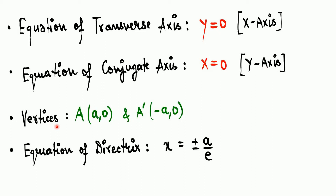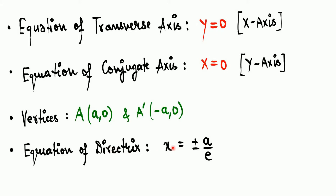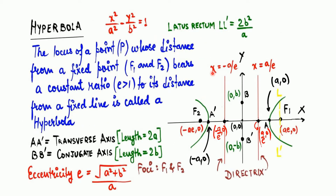The vertices are at (a, 0) and (-a, 0). The co-vertices are at (0, b) and (0, -b). The equation of the directrices is x = ±a/e — so x = a/e is the positive directrix and x = -a/e is the negative directrix.